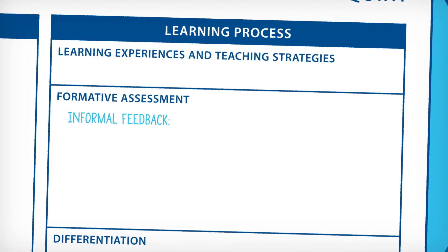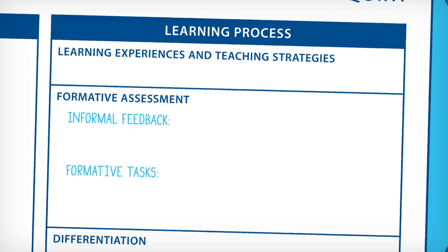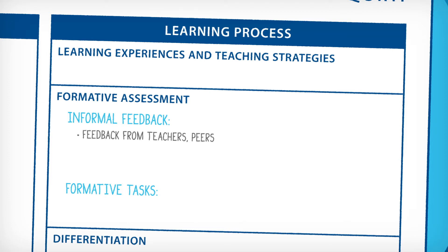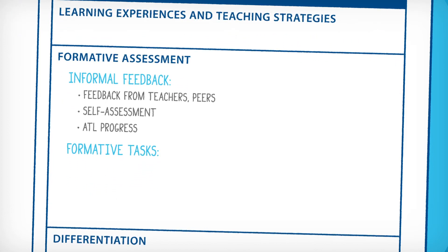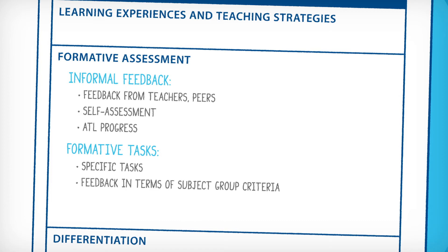Both informal types of formative assessment opportunities and formal formative assessment tasks can be identified in the unit plan. Informal formative assessment provides students with feedback that could include ongoing comments from teachers and peers during specific class activities, or in response to specific student work; self-assessment reflections; and feedback on students' progress in implementing the approaches to learning skills that have been taught and practiced during the unit. Formal formative assessment tasks provide students with explicit feedback on the full range of knowledge, understanding, skills, and the criteria that are used to assess the summative task or tasks.